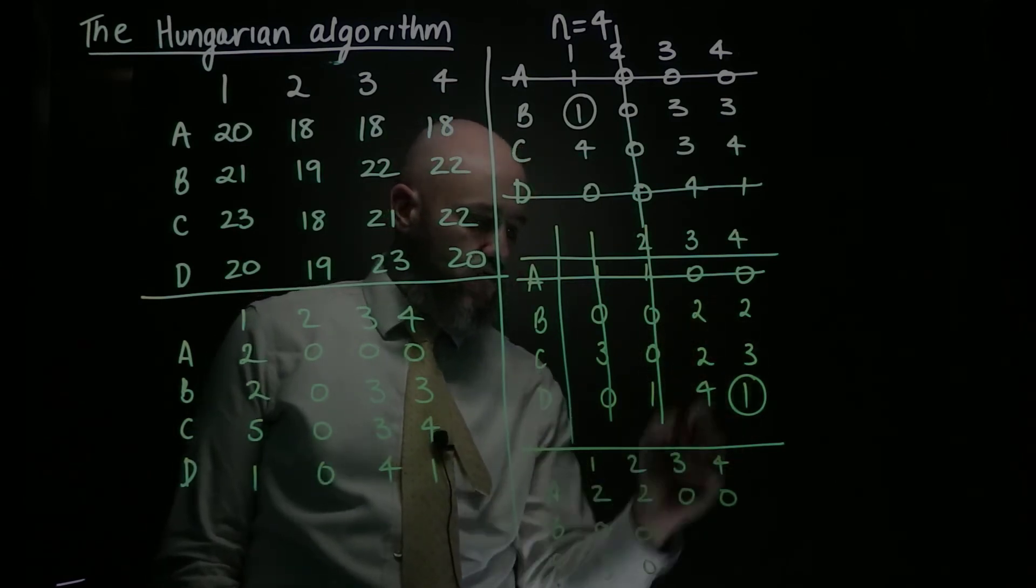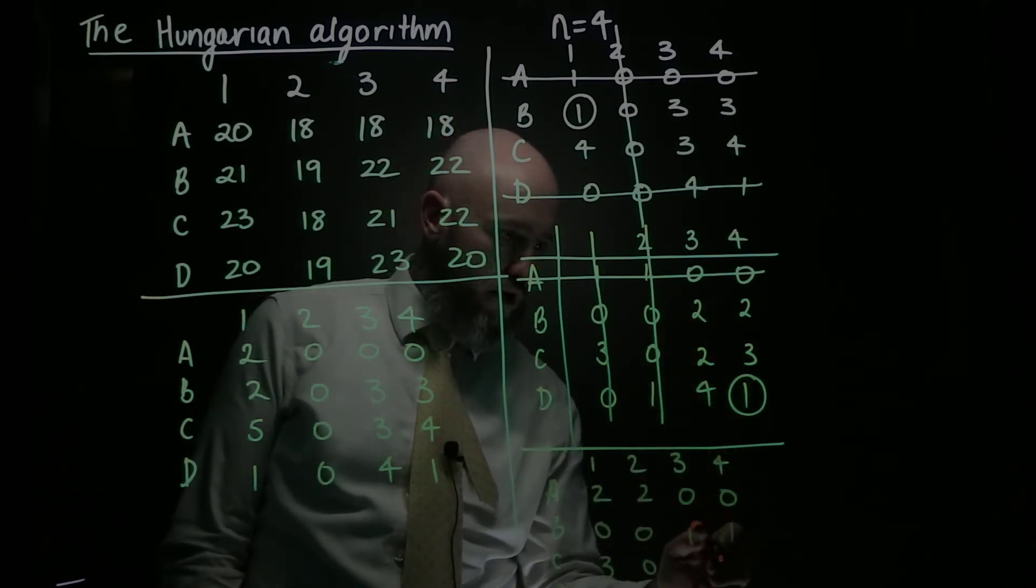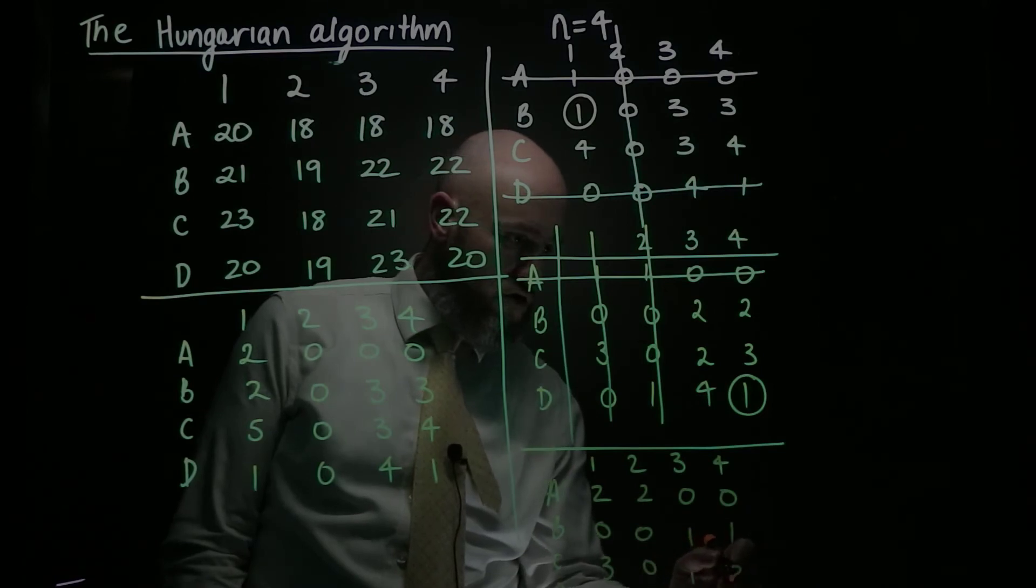And then these ones here I'm going to subtract it from, so I get 1, 1, 1, 2, 3, 0.